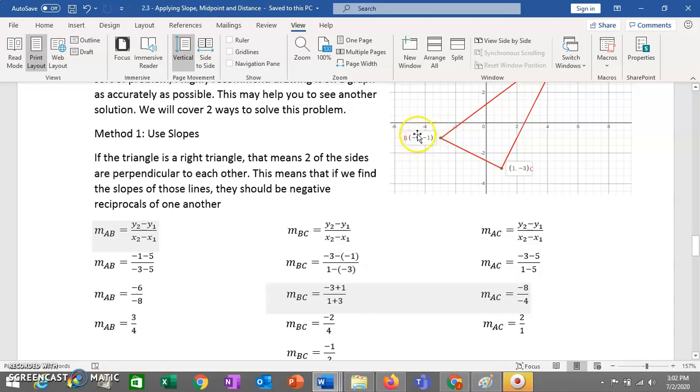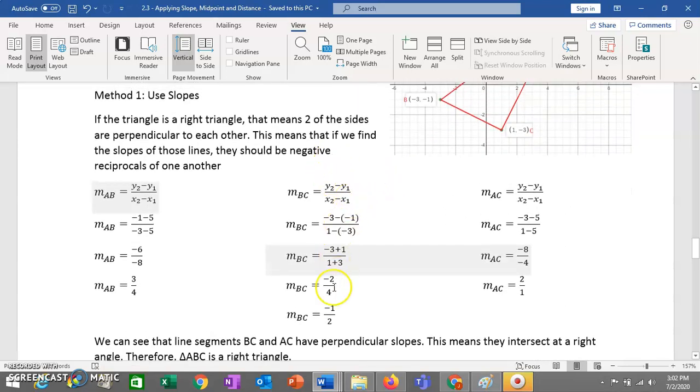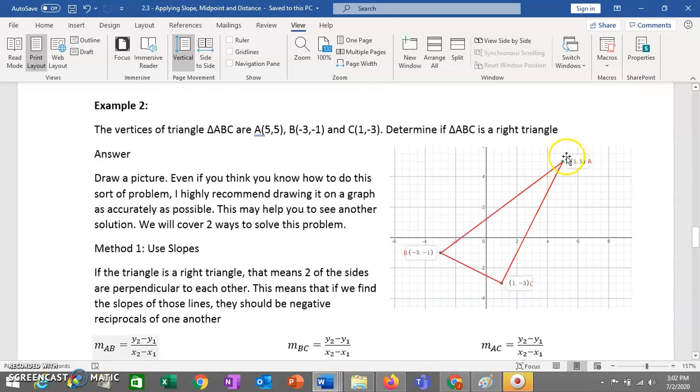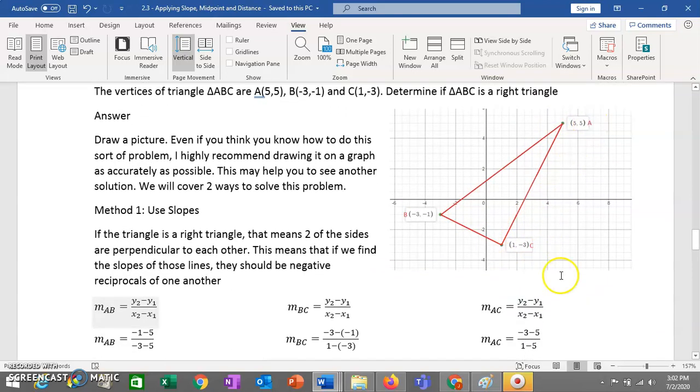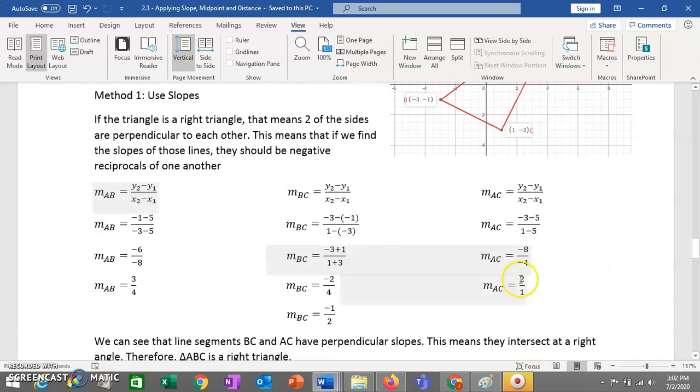BC, we're going to make the y2 value equal to negative 3, which will mean that y1 is negative 1, x2 is 1, and x1 is negative 3. So again, I should probably clarify, it doesn't matter which one of these two you make x1 or x2. But once you've made your choice, then your y values become fixed. In other words, if this is x1, then this must be y1. If this is x2, then this must be y2.